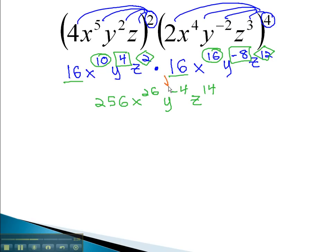To finish, the negative exponent means the y has to move to the denominator, making the exponent positive. For our final answer, 256 x to the 26th, z to the 14th, over y to the 4th. We know our expression is simplified when each variable appears once, and there are no negative exponents.